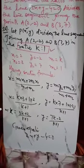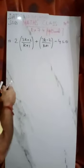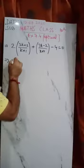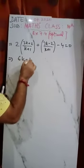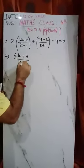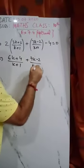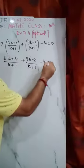We have put the values of x and y. So after substituting, it becomes (6k + 4)/(k + 1) + (7k - 2)/(k + 1) - 4 = 0.